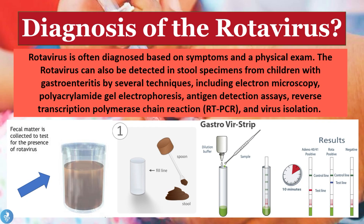The rotavirus is often diagnosed based on symptoms and physical exam. If a patient has a history of extreme diarrhea, vomiting, and presents with an extreme fever, a presumptive diagnosis of rotavirus can be made. The rotavirus can also be detected in stool specimens by several techniques including electron microscopy, polyacrylamide gel electrophoresis, antigen detection assays, reverse transcription polymerase chain reaction, and virus isolation — though these confirmatory tests are usually not necessary in most cases.